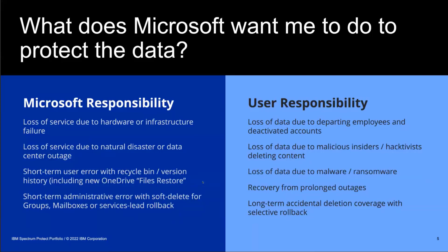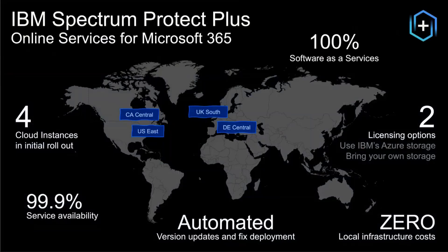Furthermore, loss of data due to malware or ransomware attacks is a customer-side responsibility. For example, if you are using OneDrive to sync data from your local computer and your local computer is affected by ransomware, the next sync would push the encrypted versions of your files into OneDrive. If you have access to a shared team OneDrive or a OneDrive on a site shared with a team, this could affect a lot of people. Microsoft expects the user to handle recovery from prolonged outages or long-term accidental deletion with selective rollbacks. IBM Spectrum Protect Plus Online Services for Microsoft 365 was implemented to exactly fill these use cases — to protect the data in Microsoft 365 and provide the ability to recover it if it was deleted or lost.